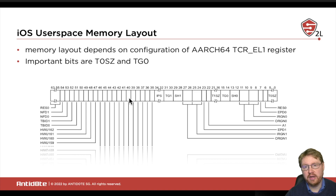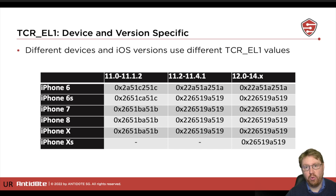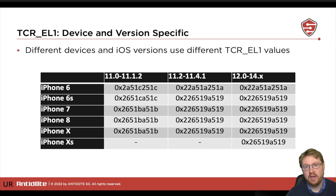In our case, the important bits are the T0SZ and the TG0, because they are about influencing the user space memory layout. On iOS devices, and of course also on Apple M1s, this configuration is done very early in the startup code in the kernel. You can see in the early startup code that a specific hardcoded value is written into this register.